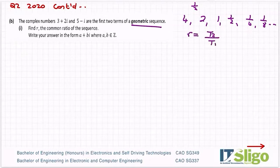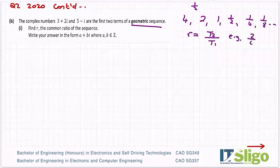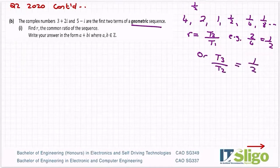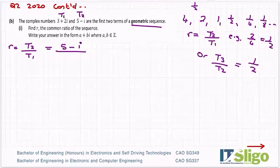How do we find the common ratio? Well, it's one term over the one before it. For example, 2 over 4, so T2 over T1 will give me the half. Or T3 over T2, which would be 1 over 2, or any of them. In this one, r would equal T2 over T1. They've only given me two terms, so it's 5 minus i over 3 plus 2i.